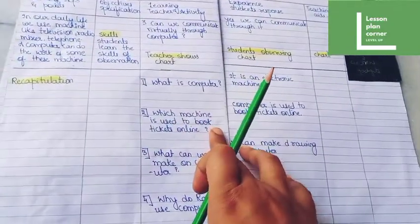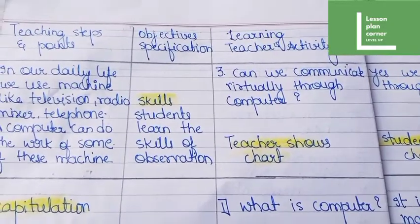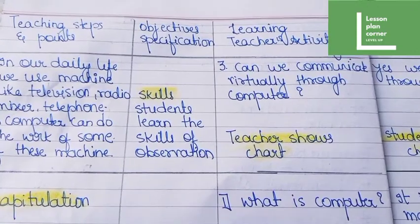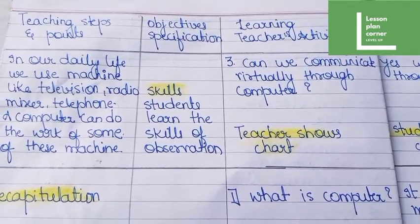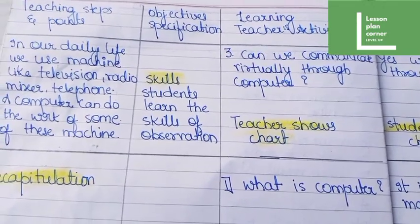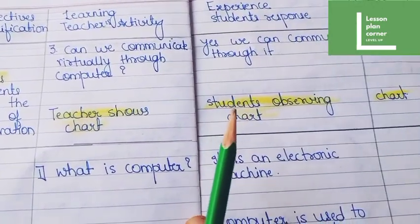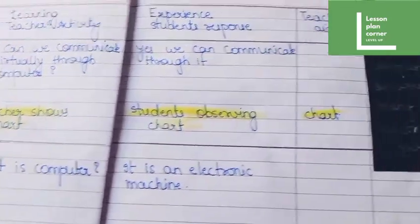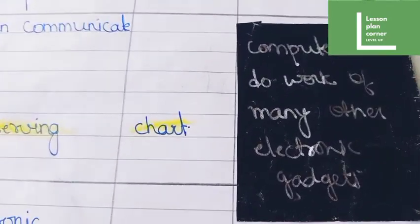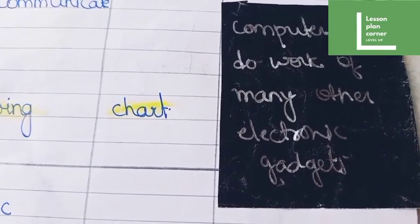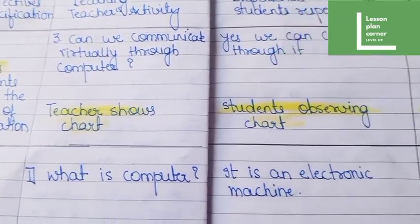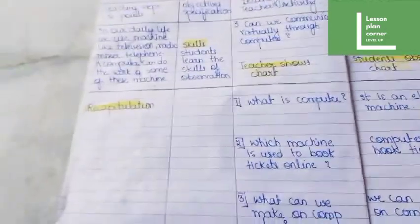Now let's turn the page and see the rest part of Presentation 2. Here you can see the question: can we communicate virtually through computer? And here is the expected answer. The blackboard work states: computer can do the work of many other electronic gadgets also. Here you can see skills — the teacher shows a chart and students observe the chart.